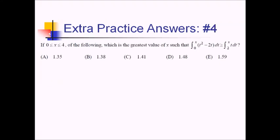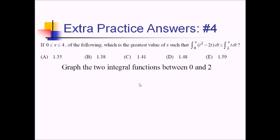On this problem, between the intervals 0 to 4, what's the greatest value of x such that the first function is bigger than the second? One way would be to plug in all five answer values to both functions and compare — kind of annoying. Another way is to graph the two integral functions. I'm going to look between 0 and 2 since that's where the answer choices are clustered.